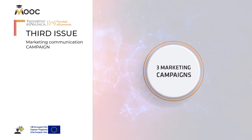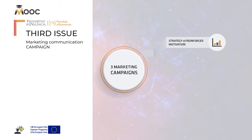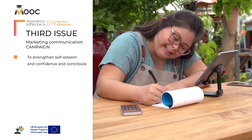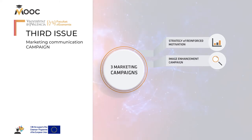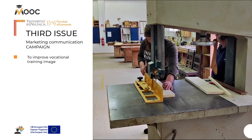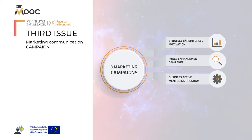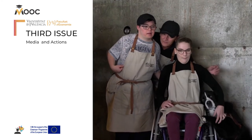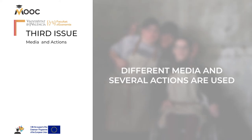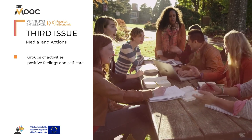In order to achieve the objectives and goals, three marketing campaigns were designed: a strategy of reinforced motivation to strengthen self-esteem and confidence and contribute to the development of social and personal skills; an image enhancement campaign to improve vocational training's image among trainees, parents, and the community; and a business active mentoring program supported by an entrepreneur or group of companies. To carry out the three campaigns, different media and several actions are used.